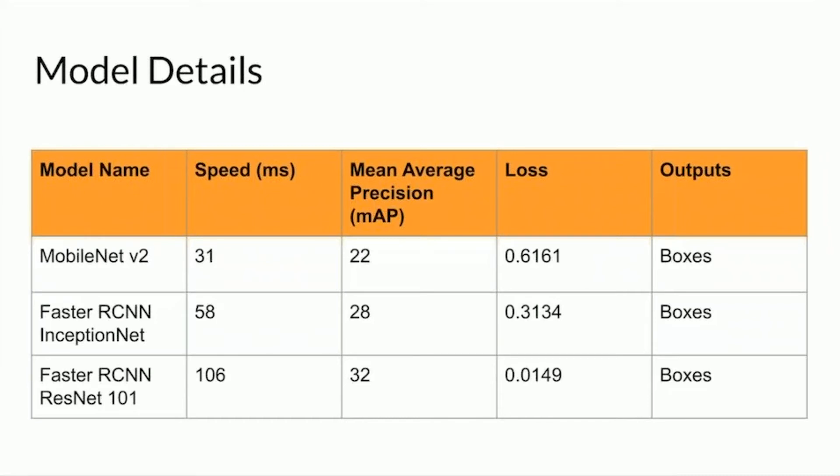And loss detects how bad the model predicts on a single sample. It provides a general idea of how the model is learning to recognize classes. In this case, it provides an idea of how well the model can detect a child versus a parent. The lower the loss, the better the model is performing. Outputs dictate what kind of infant shape, a box or a mask, is shown on a respective image. In the case of these models that I tested, they're all boxes, but in some cases, you may see masks.